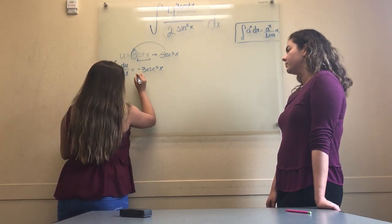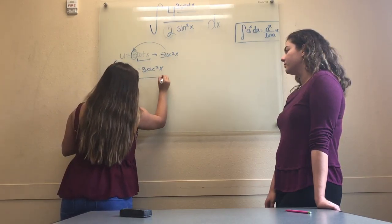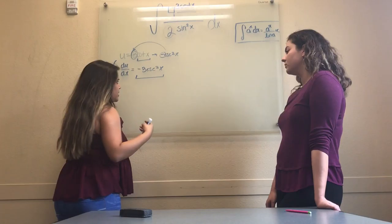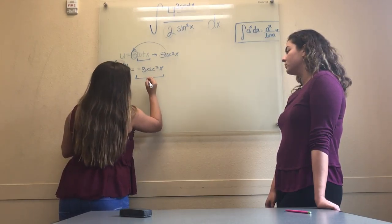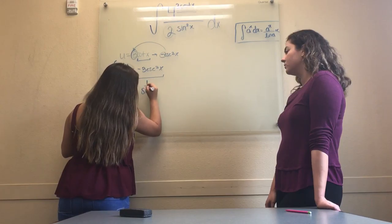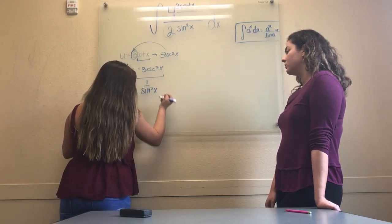Now we have du over dx is equal to negative 3 cosecant squared x. To further simplify, we decided to take negative cosecant squared x and use trig identity rules and make it into negative 3 over sin squared x.